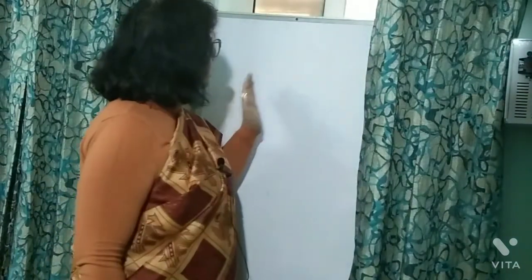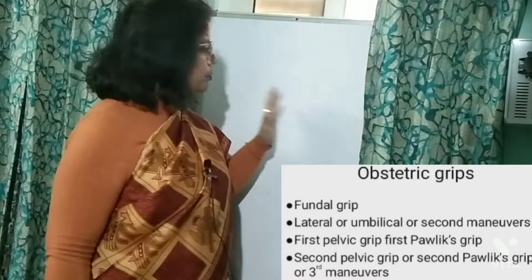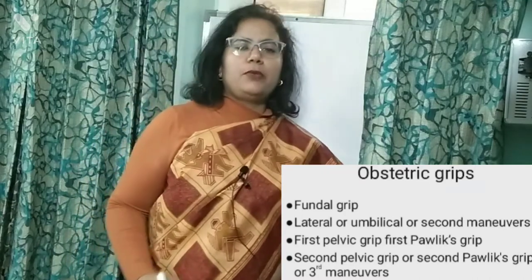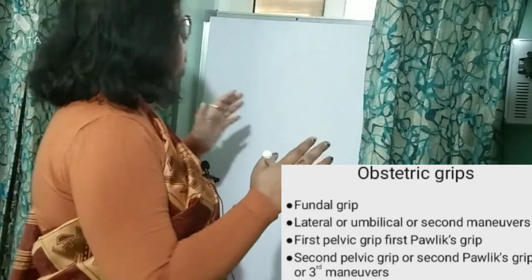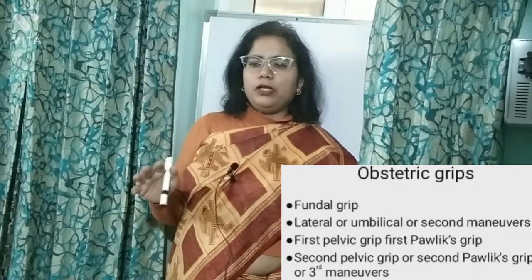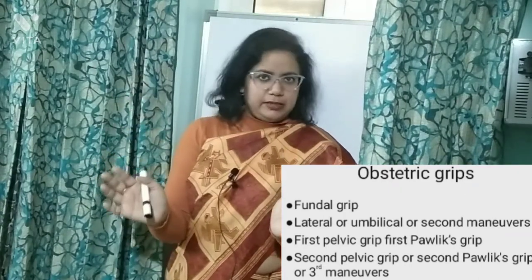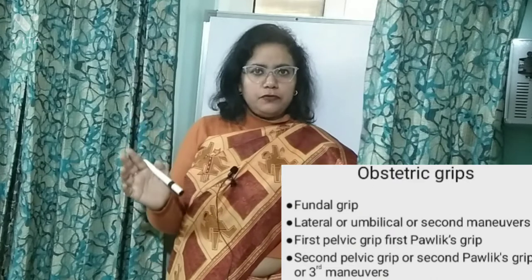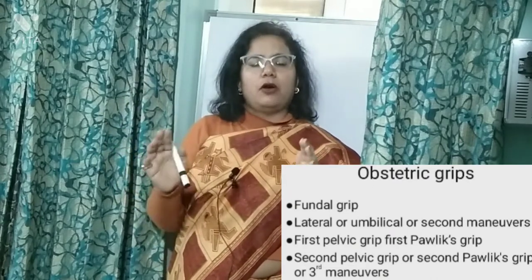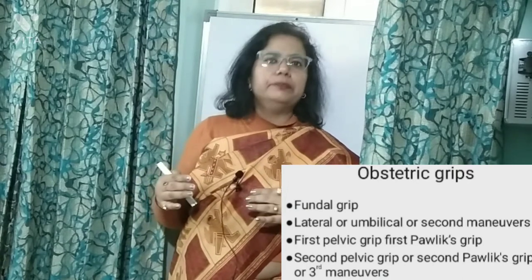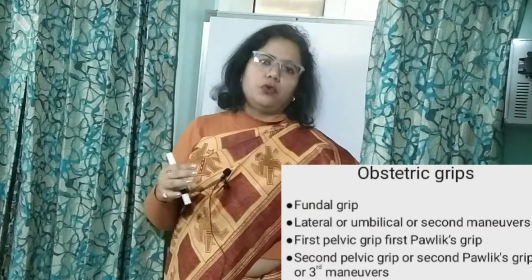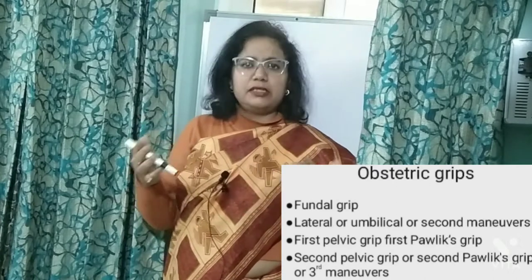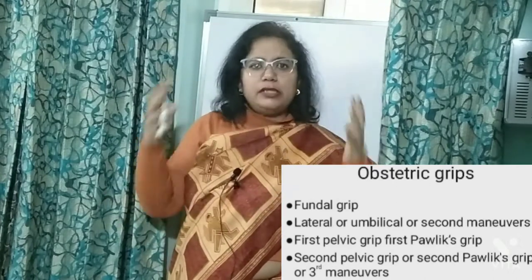After these measurements, move to the abdominal grips — these are very important. The purpose of the obstetric grips is to assess the position of the baby in utero: where is the breech, where is the head, where is the back, where are the shoulders, where is the occiput, and whether the condition is flexed or extended. You gather all this information through the grips.